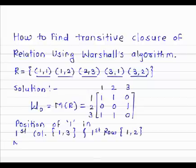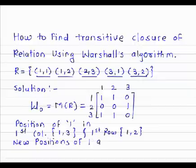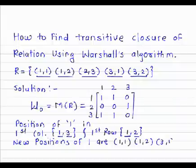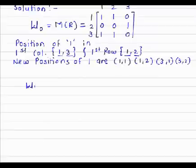Therefore, new positions of 1 are (1,1), (1,2), (3,1), (3,2). We have taken the Cartesian product of these two. With the help of the new positions, we are getting the new matrix called W1.